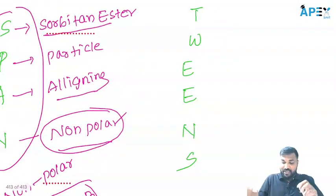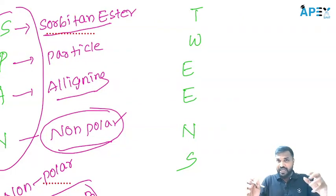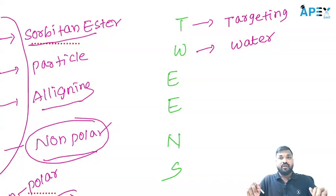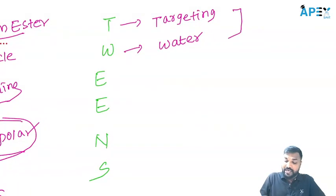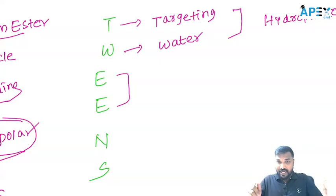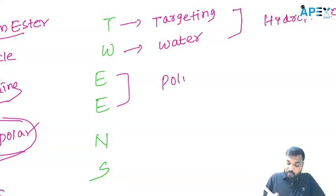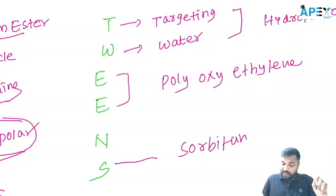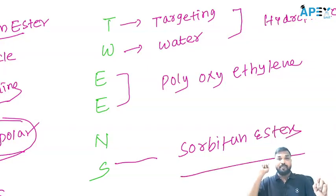On the other hand, we have the Tweens. How to remember the Tweens? It is very easy — no need for a big mnemonic. T means it is targeting water, so this is hydrophilic nature. Tweens are hydrophilic. The two E's in Tween stand for polyoxyethylene — polyoxyethylene sorbiton esters. That is the Tween.